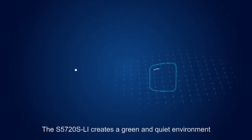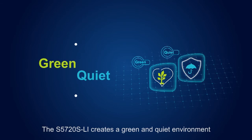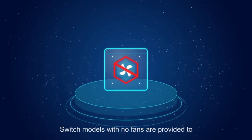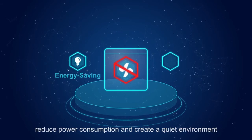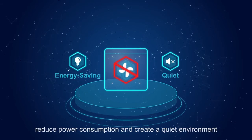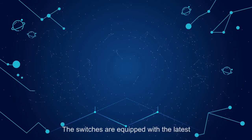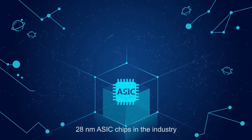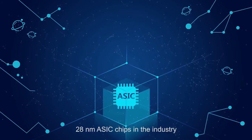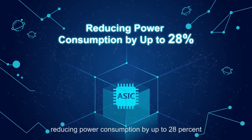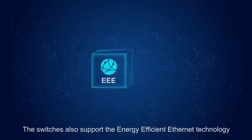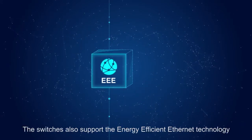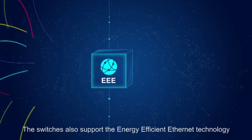The S5720S-LI creates a green and quiet environment. Switch models with no fans are provided to reduce power consumption and create a quiet environment. The switches are equipped with the latest 28-nanometer ASIC chips in the industry, reducing power consumption by up to 28 percent.